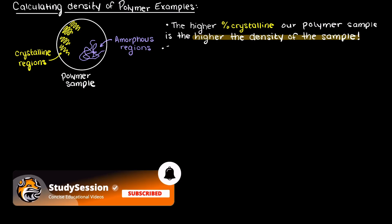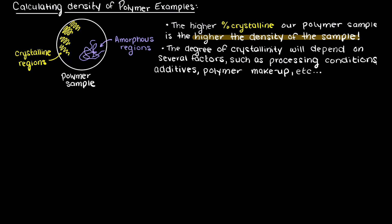As we also previously talked about, the degree of crystallinity and the amorphous regions in a given polymer sample will largely depend on several factors, such as processing conditions, additives to the polymer, the polymer makeup, and things like that.